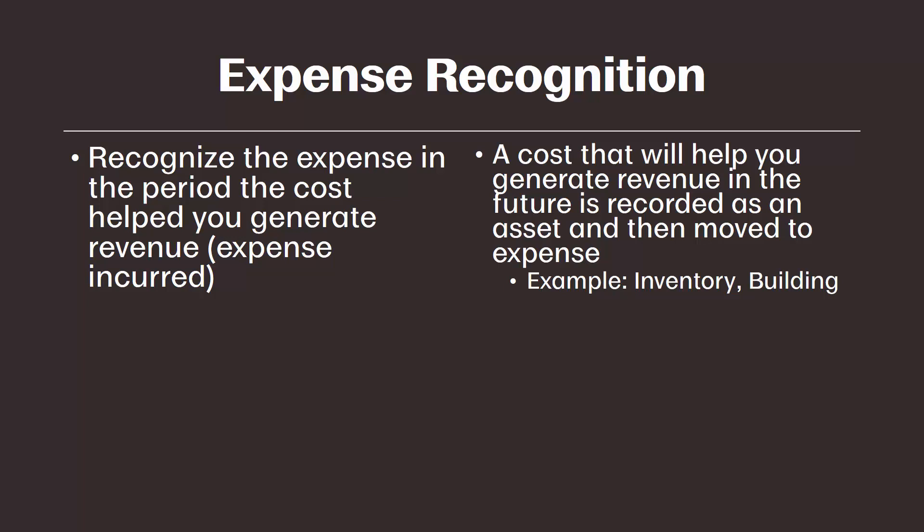Examples of this include inventory, which gets moved to an expense called cost of goods sold when we sell the inventory. Another example is a building, which will be expensed each period through depreciation expense.